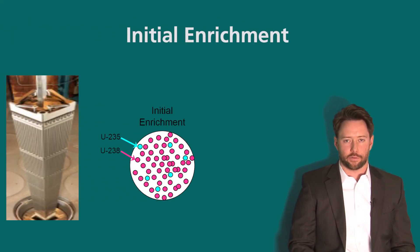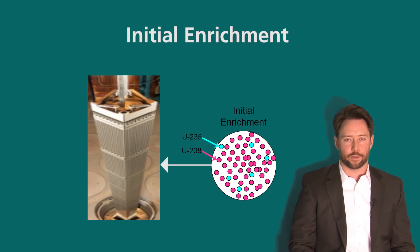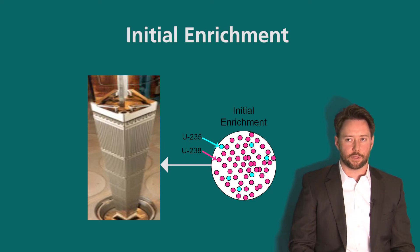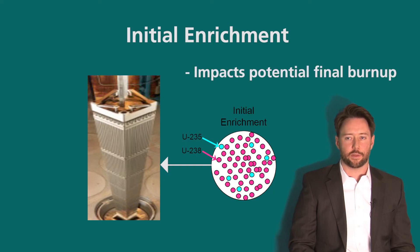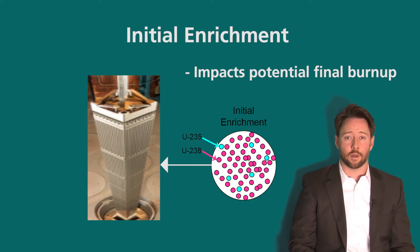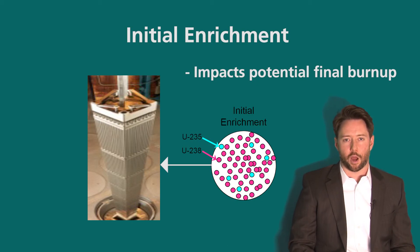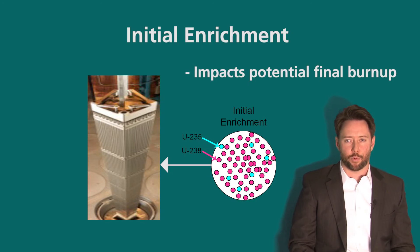Another operational characteristic to consider is initial enrichment. We discussed initial enrichment as a physical characteristic of fresh fuel assemblies, but it also impacts operation — specifically, the potential final burn-up. The more fissile content, whether U-235 or plutonium-239 for a MOX (mixed oxide) fuel assembly containing both uranium and plutonium, the higher the burn-up you can operate to and the more energy you can extract from the fuel.